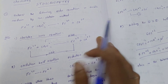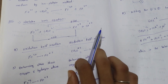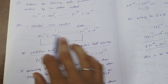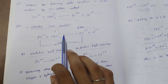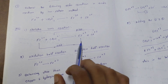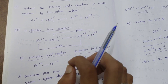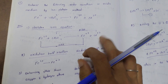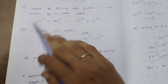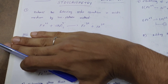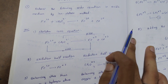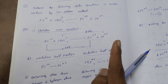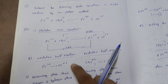First, we will write the skeleton ionic equation. You have to identify the oxidation reaction and the reduction reaction. So you form the skeleton ionic equation, identify the oxidation and reduction half-reactions, and then we will write and analyze the skeleton equation to calculate the oxidation and reduction reactions.